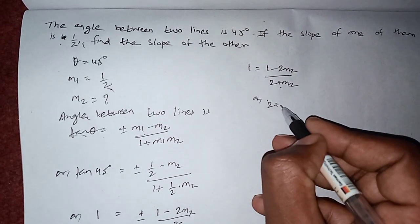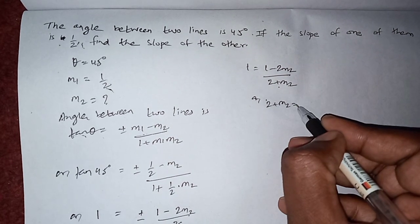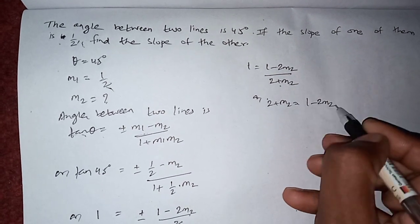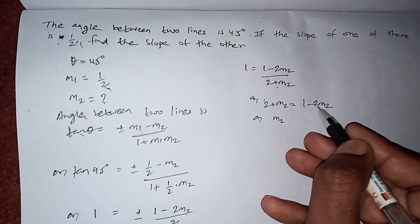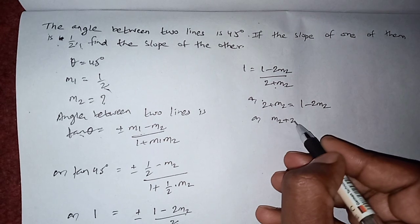2 into 1 will be 2 plus m2 equals to 1 minus 2m2. Or we can bring this 2m2 to this side.